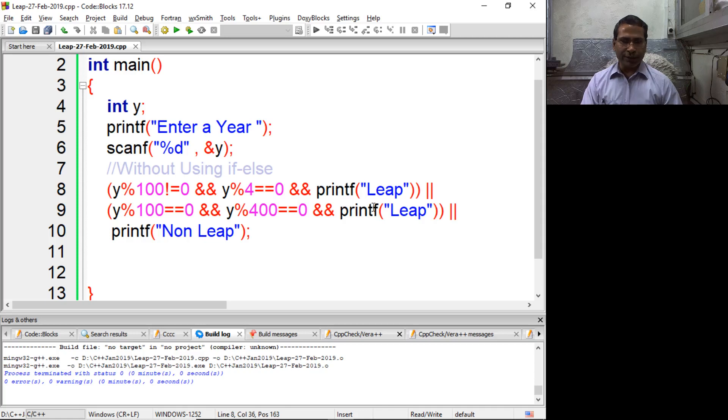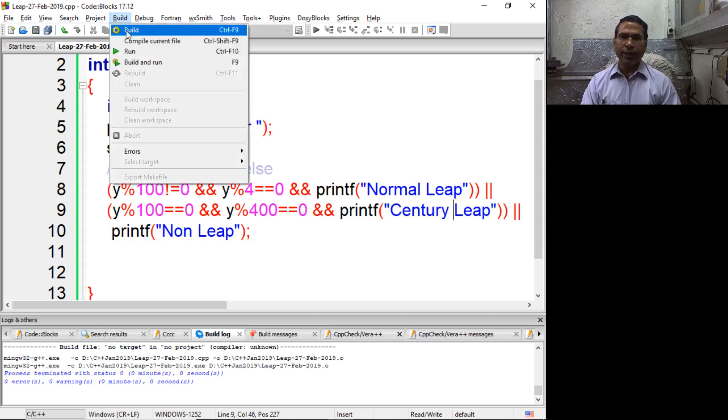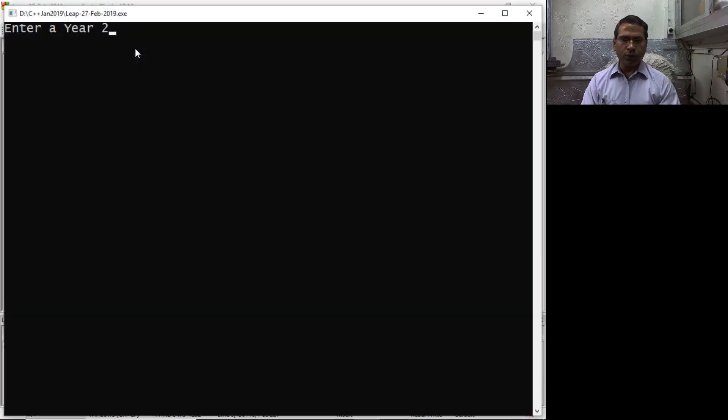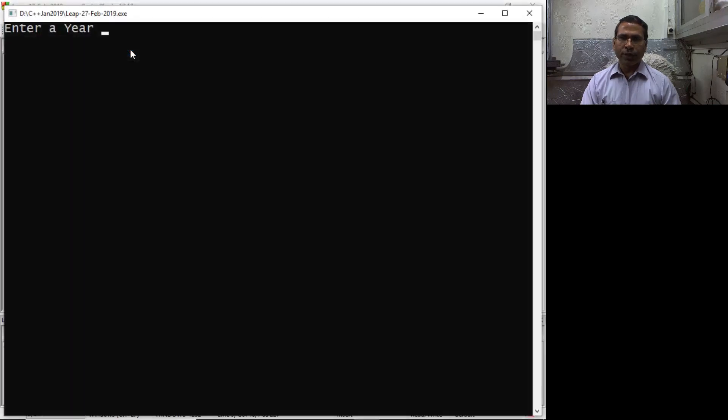We can improve some message here. We can say normal year, normal leap year, and here we can say century leap. Now we are compiling again, okay, and run.